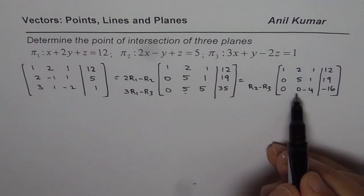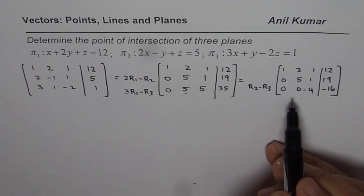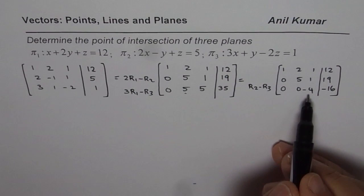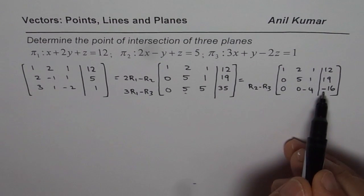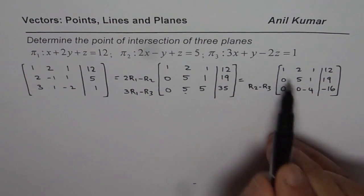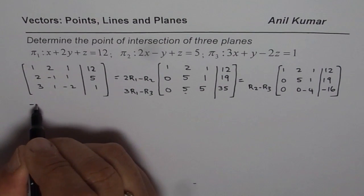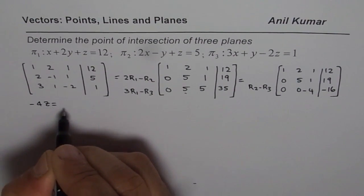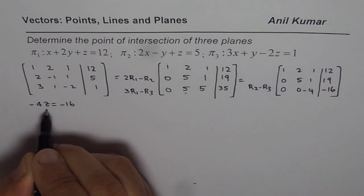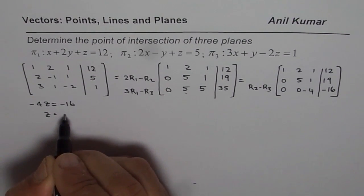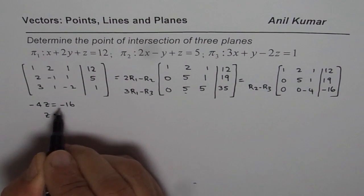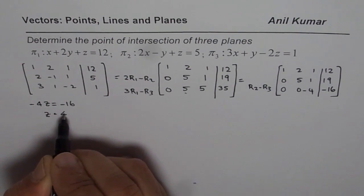Now we got these three zeros. So it has become extremely simple for us. So we can now get the value of z from here. -4z equals to -16. That is how we translate it back into equations. -4z = -16, and z equals to -16 divided by -4, which is 4.